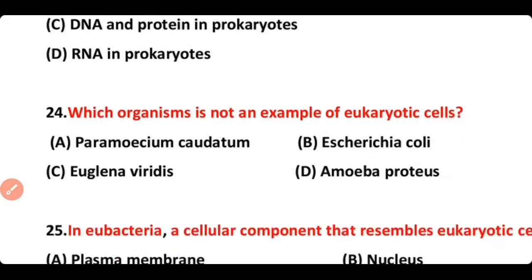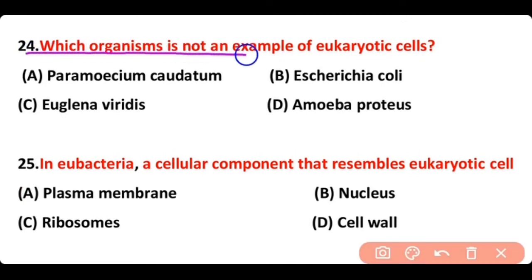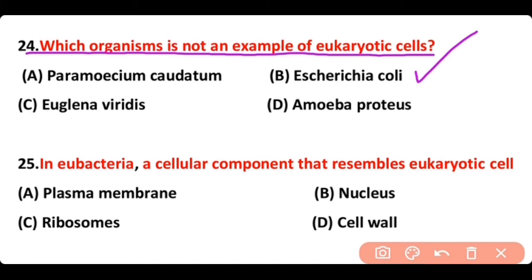Question number 24. Which organism is not an example of a eukaryotic cell? Options: Paramecium caudatum, E. coli, Euglena viridis, Amoeba proteus. The correct answer is option B — E. coli is not an example of a eukaryotic cell; rather, it belongs to prokaryotic cells.